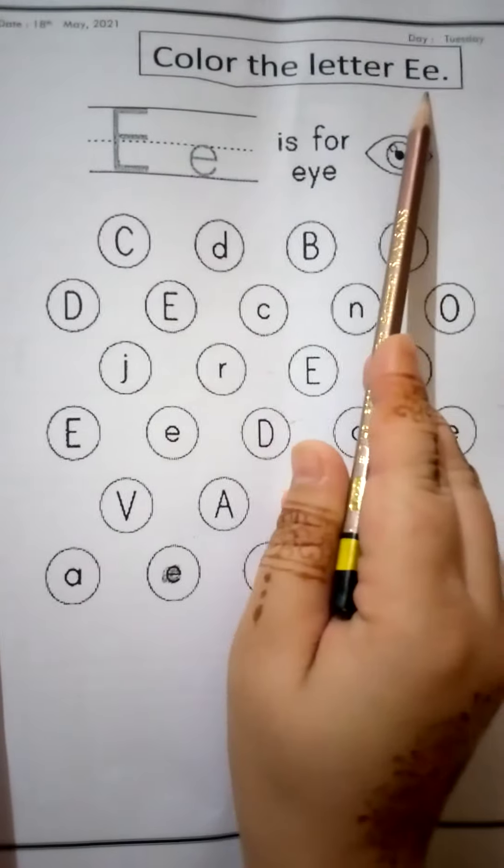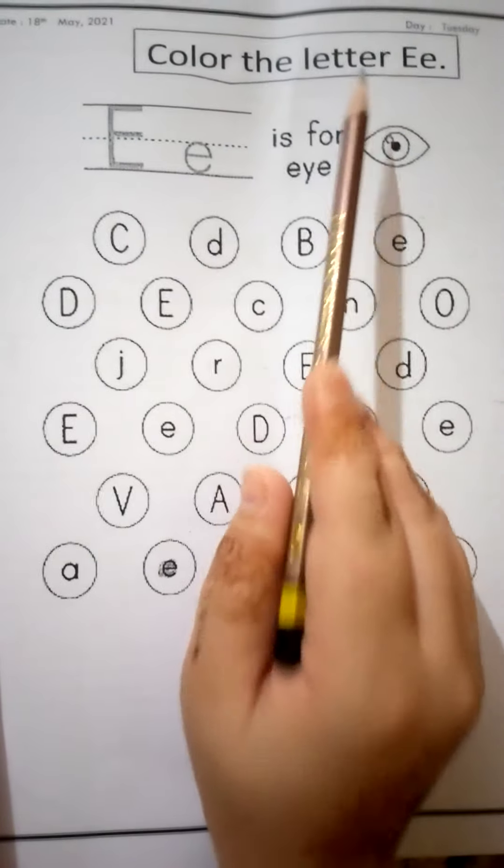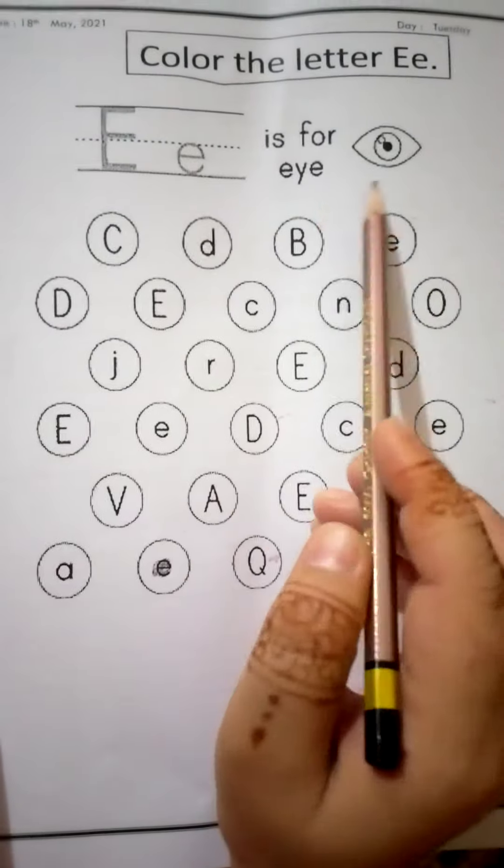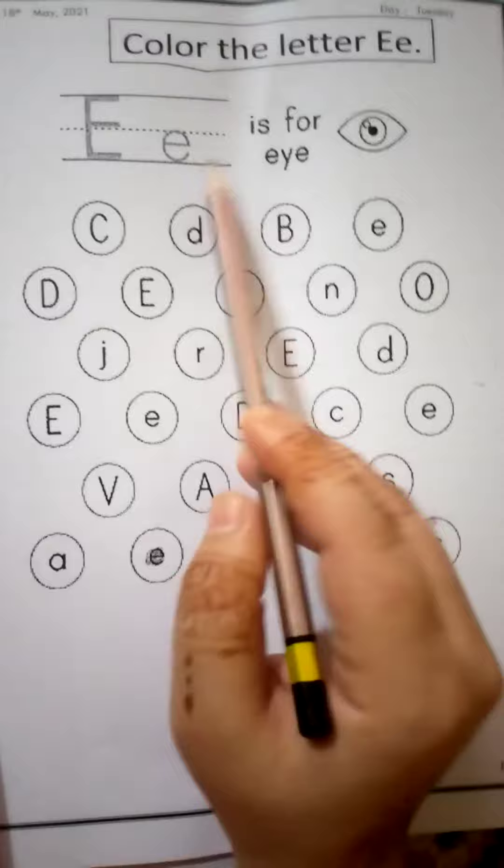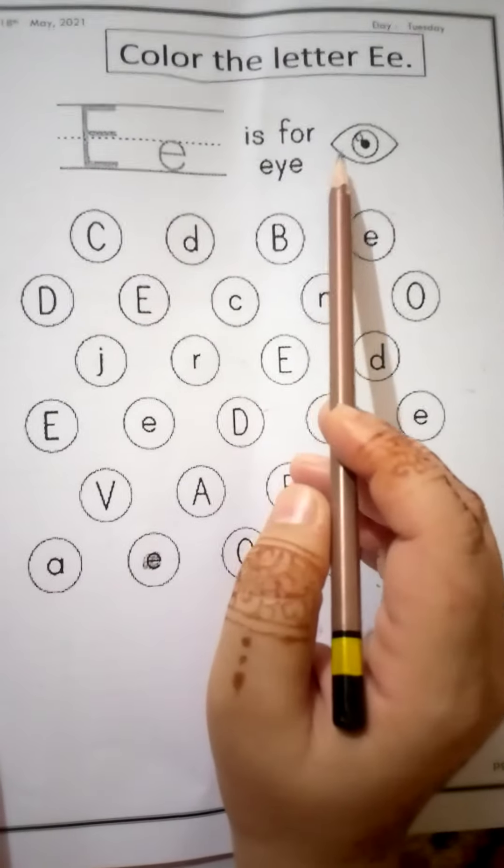Color the letter E. The name of letter is E and the sound of letter is E. E is for eye.